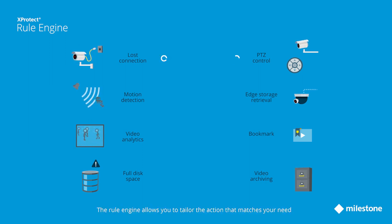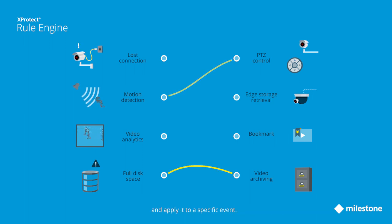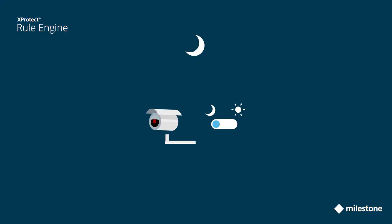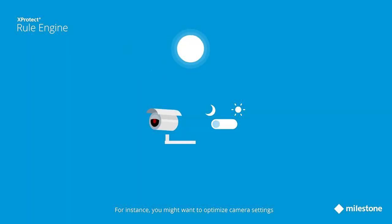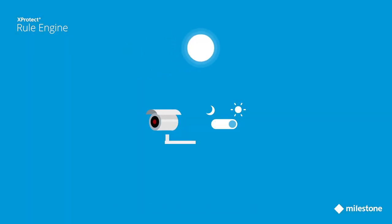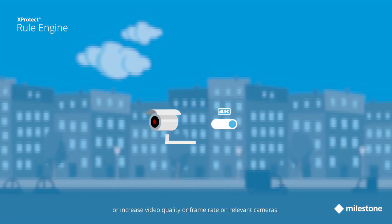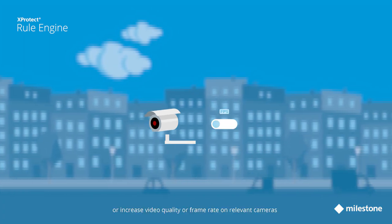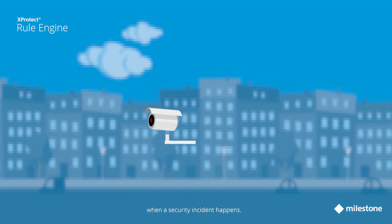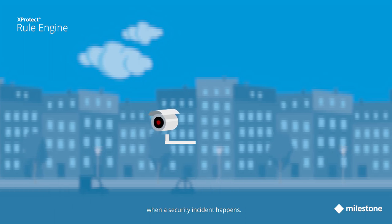The rule engine allows you to tailor the action that matches your need and apply it to a specific event. For instance, you might want to optimize camera settings for day versus night operation, or increase video quality or frame rate on relevant cameras when a security incident happens.